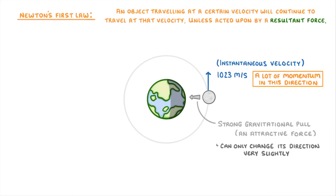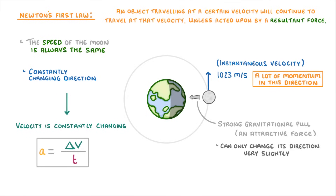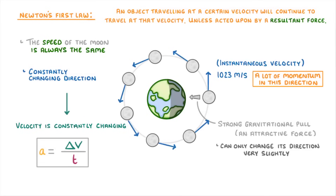Now, one of the confusing things about this situation is that even though the speed of the Moon is always the same, it's constantly changing direction. And because velocity measures both speed and direction, this means its velocity is constantly changing. So if we remember the equation for acceleration, we can see that any change in velocity, which is V, must mean an acceleration, which is A. This means every time the Moon changes direction as it orbits, it's actually accelerating, even though it's not getting any faster or slower.